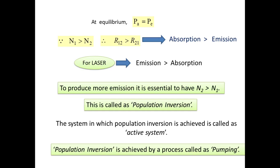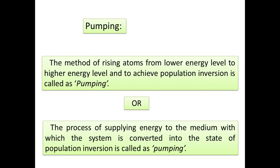The process of achieving population inversion is called pumping. Pumping is the method of exciting atoms or electrons from the ground level to the excited level to achieve population inversion. Another definition: pumping is the process of supplying energy to the medium by which the system is converted into the state of population inversion. Energy can be supplied in different ways — electrical energy or photon energy — such as the electrical discharge method, which is used to pump electrons to the excited state.